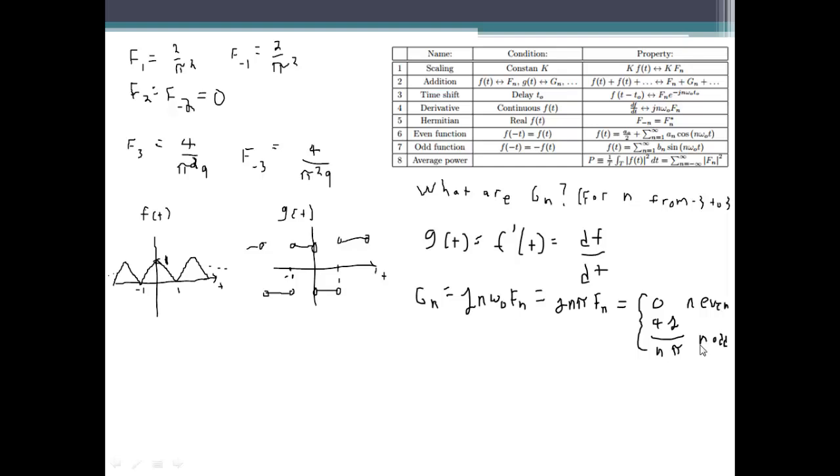But the one that you usually have to be more careful about is g of 0, because g of 0 doesn't always go by these rules. It's just a good idea to always redo the integral for finding the average function, because g of 0 is just the DC value which is the average value of the function.